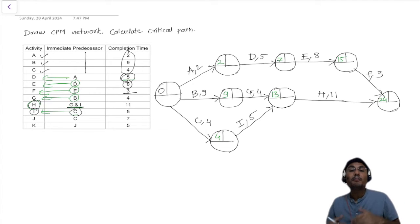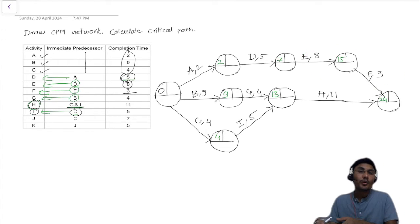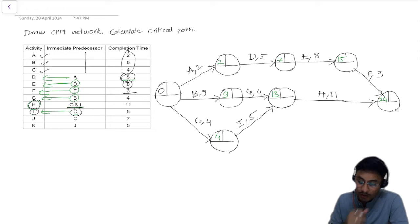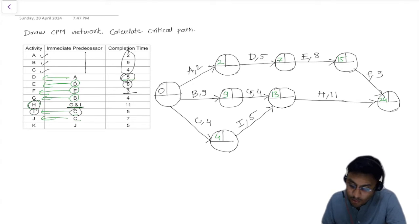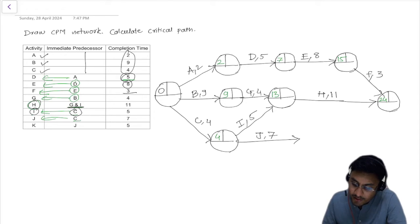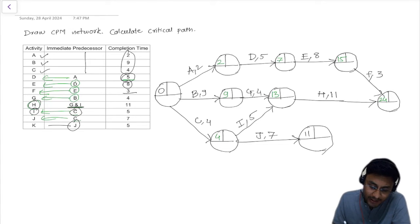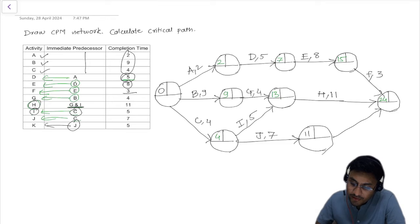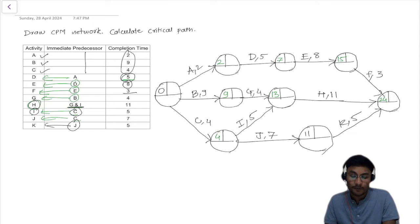The value of 15 plus 3 does not exceed 24, so that path is not the maximum. Moving further, once C activity completes, J activity will start with a duration of 7, giving 4 plus 7 which is 11. Once J activity finishes, K activity will start with a duration of 5 — 11 plus 5 is 16, which is also not more than 24. So this completes our network diagram.